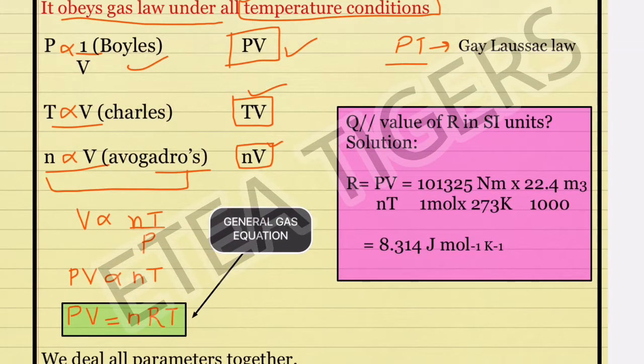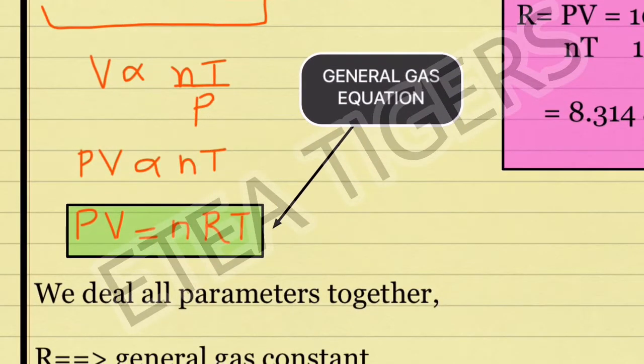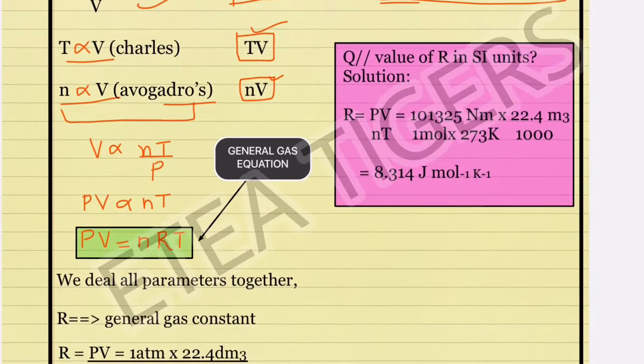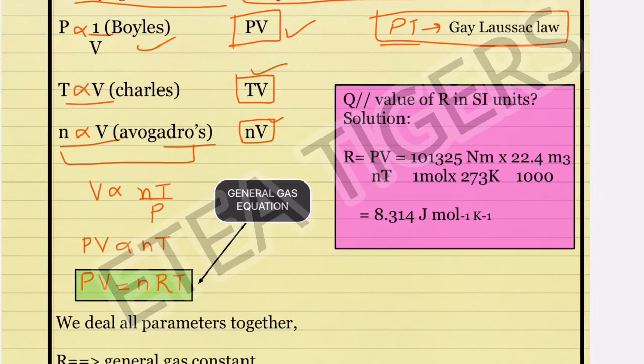This is Charles law, T proportional to V. So PV is directly proportional to nT.